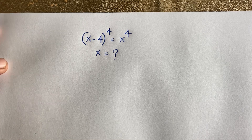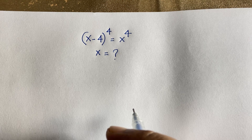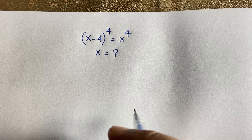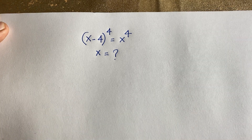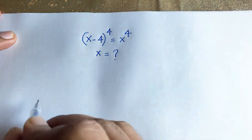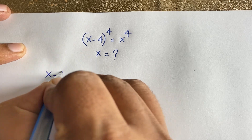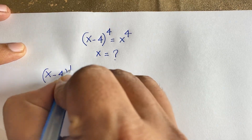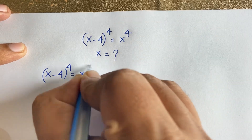Hello everyone. In this video we have solved this interesting math question. The question is: (x minus 4) to the power 4 is equal to x to the power 4. Here, x is equal to what? How to solve this question? Our equation is (x minus 4) whole to the power 4 is equal to x to the power 4.